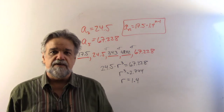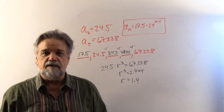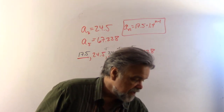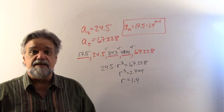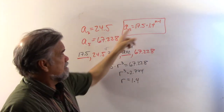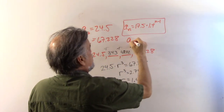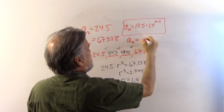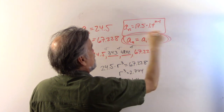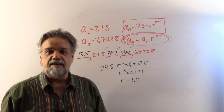The next video will cover geometric series. I hope this has given you a nice introduction to geometric sequences. The main thing to take away is that for a geometric sequence, a sub n equals a sub 1 times r to the n minus 1. If you can come away with that, you've done well. See you next time!